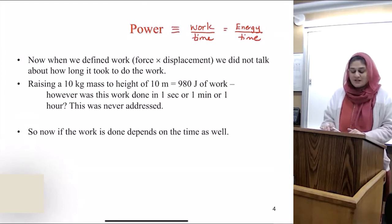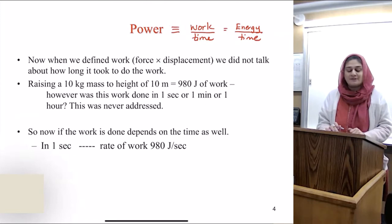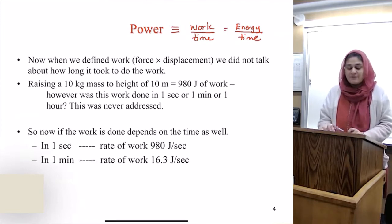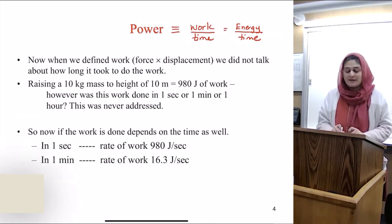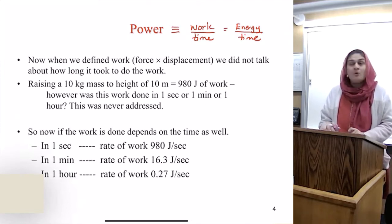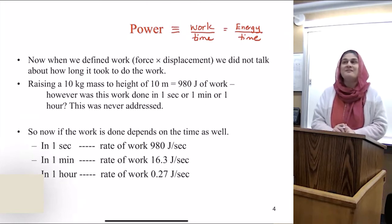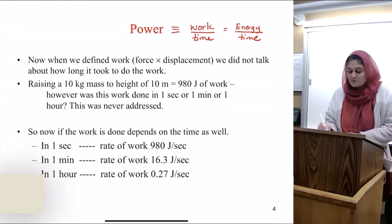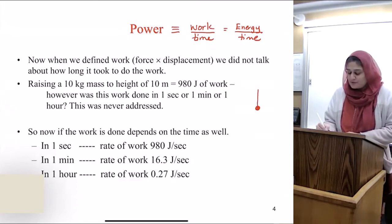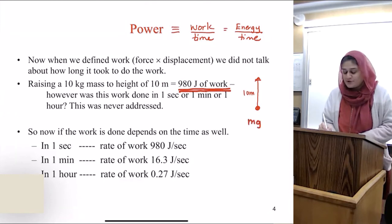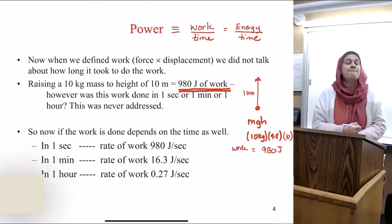If the work depends on time, the rate of work that you do in one second is 980 joules per second. In one minute, the same work, the rate will become 16.3 joules per second. Or the same work done in one hour will be 0.73 joules per second. In order to raise a mass from 0 to 10 meters needs 980 joules of work. Why? Because it's mgh. M is 10 kilograms, g is 9.8 and height is 10.